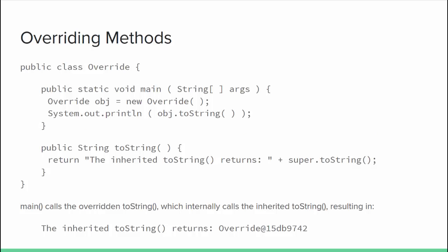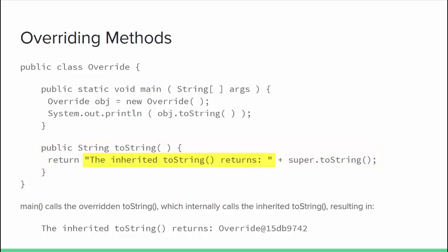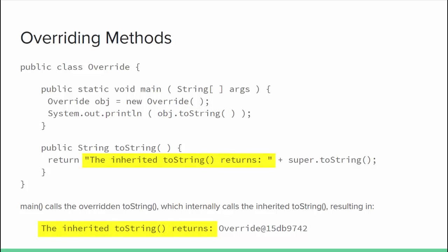If you've ever written a toString method, you have overridden an inherited method. In this example, class Override doesn't declare an explicit parent, so it implicitly extends the Object class and inherits a toString method from it. I've overridden the toString method — same signature but a new body. I'm concatenating the inherited toString result onto the result of the original inherited toString. Super.toString() returns what the Object class toString would give. So when I call object.toString(), the result includes 'Override' and a reference — the standard result from the Object version — because overriding simply means providing an alternative with exactly the same signature to an inherited method.